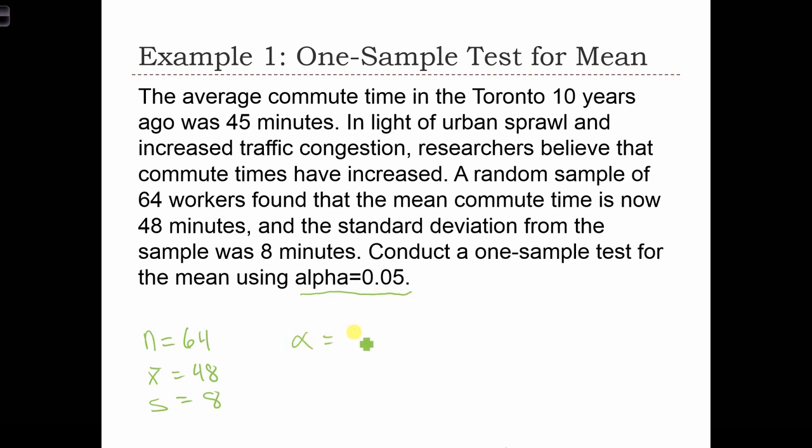In other words, they want to be 95% sure of their test results. The other thing that we see is that the assumption, or the prevailing wisdom about commute times, is that the average commute time in Toronto was 45 minutes. So this is going to be used in the null hypothesis.